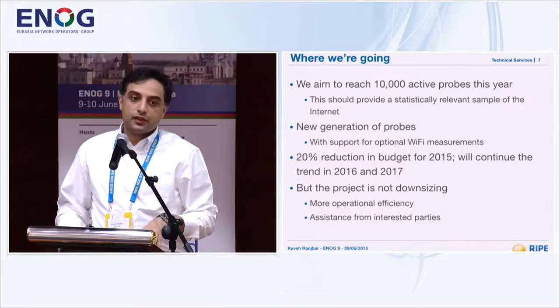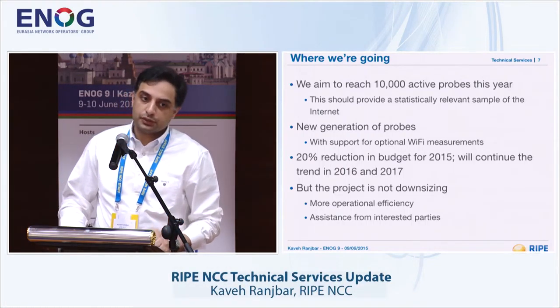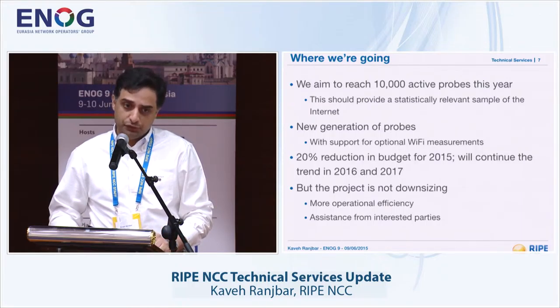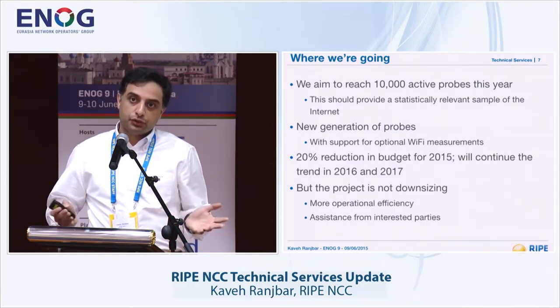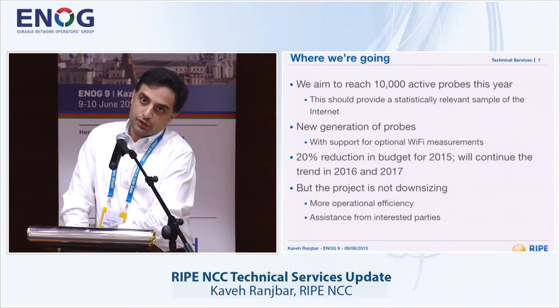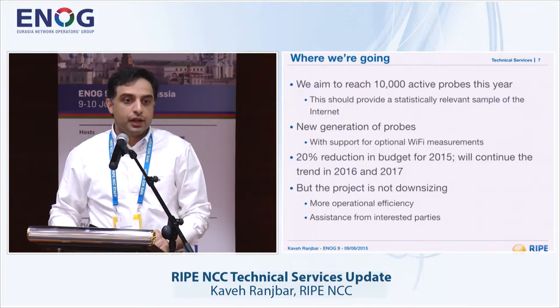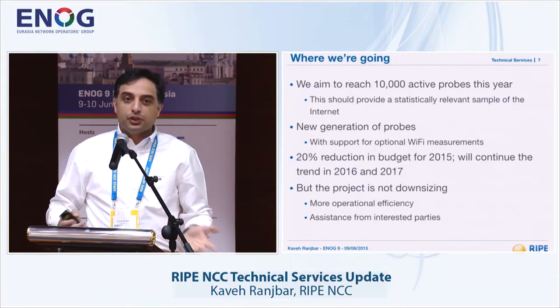With Atlas, we aim to reach 10,000 active probes this year, which should provide a statistically relevant sample of the internet. At the moment, we cover about 14.5% of IPv6 ASNs and 6.7% of IPv4 ASNs. We hope to get to 10% of active IPv4 ASNs with 10,000 probes, though it's hard to predict — we might have 100 deployed in one ASN or 100 in 100 different ASNs. We are also working on a new generation of probes.